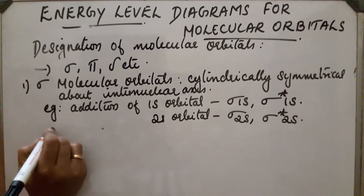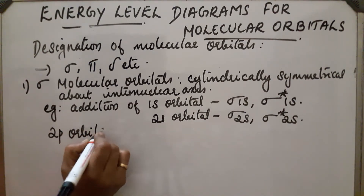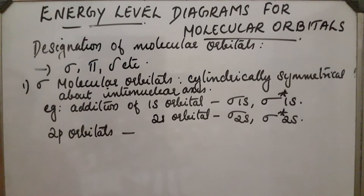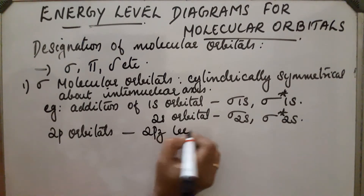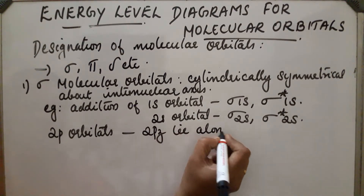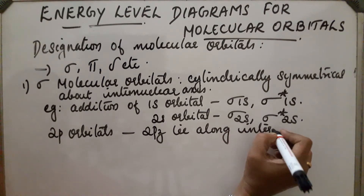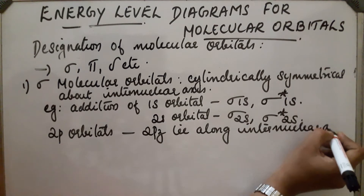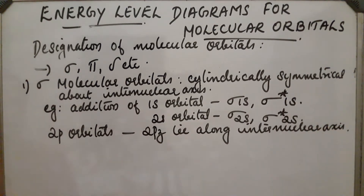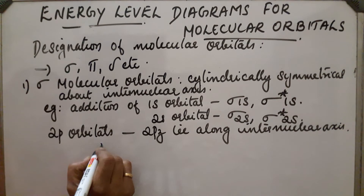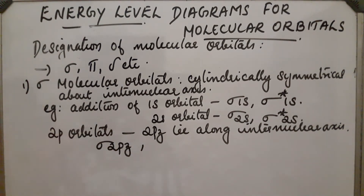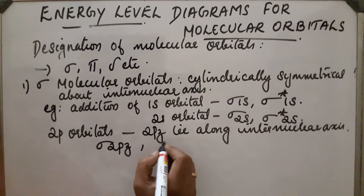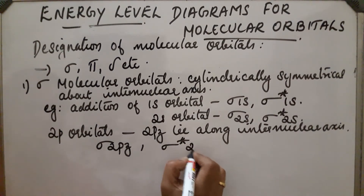In the case of 2p orbitals, it is assumed that the 2pz orbital lies along the inter-nuclear axis. The addition of 2pz orbitals is represented as sigma 2pz, and the subtraction overlap of 2pz orbitals is represented as sigma* 2pz.